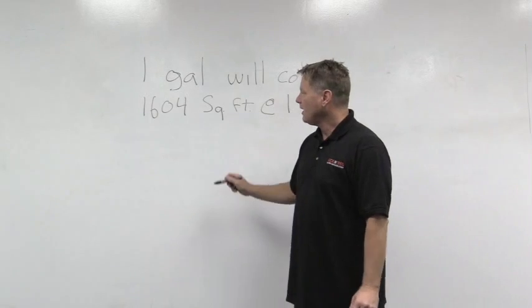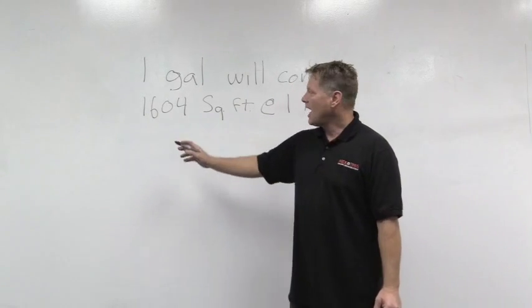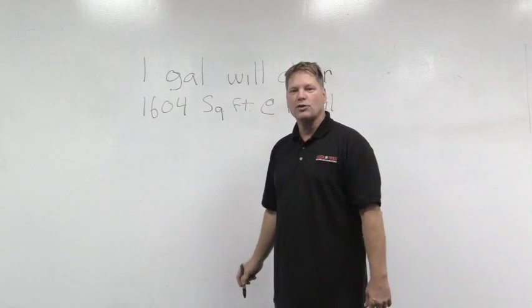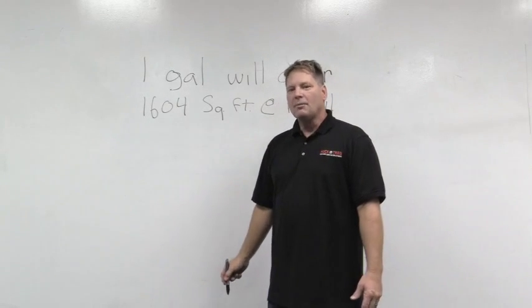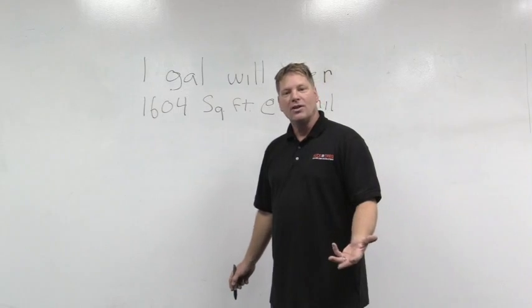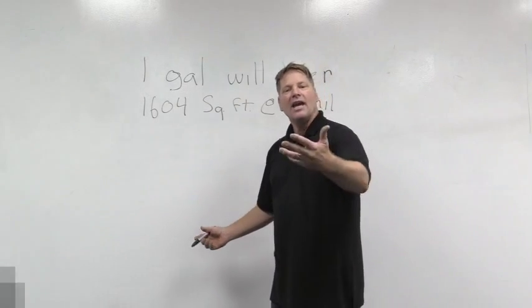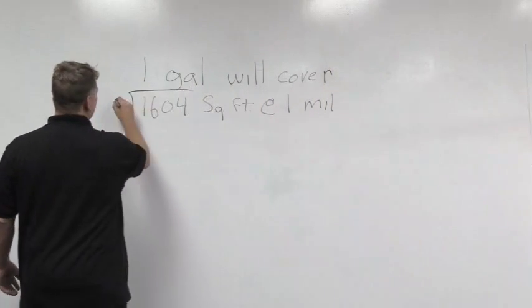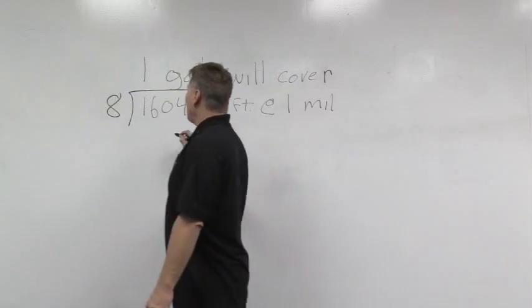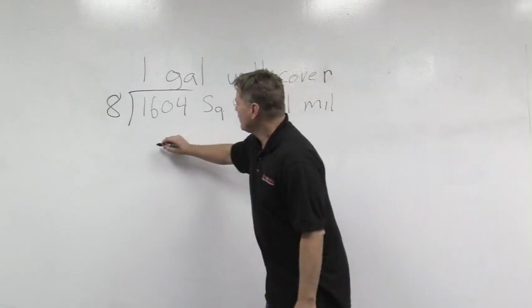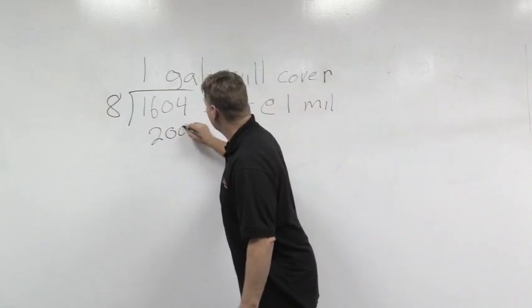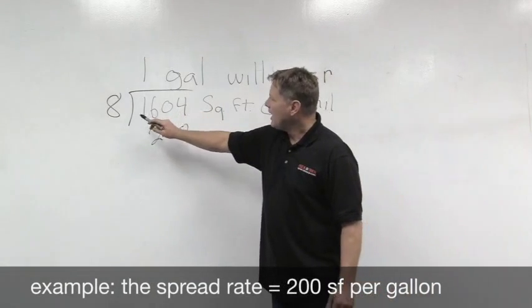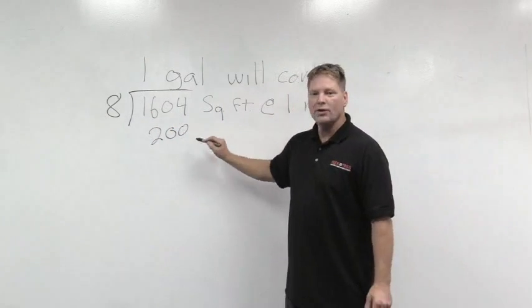Why is that important? If I'm on a job and I know I have a floor that's 1,604 square feet and the manufacturer says put it down at eight mils, we can simply take 1,604 and divide that by eight mils. What we end up getting is a little over 200 square feet per gallon. So now we know at eight mils, we're at 200 square feet.